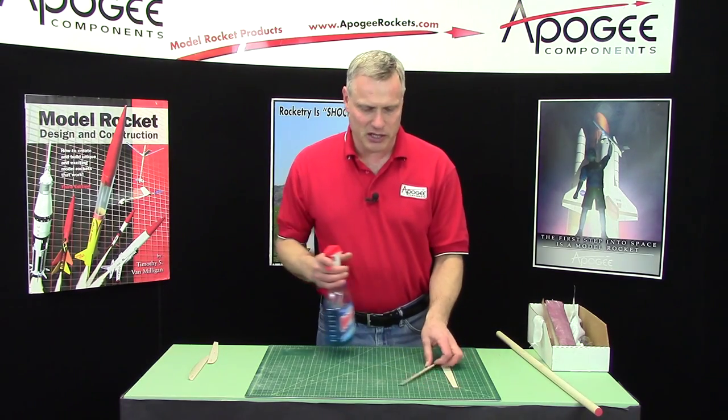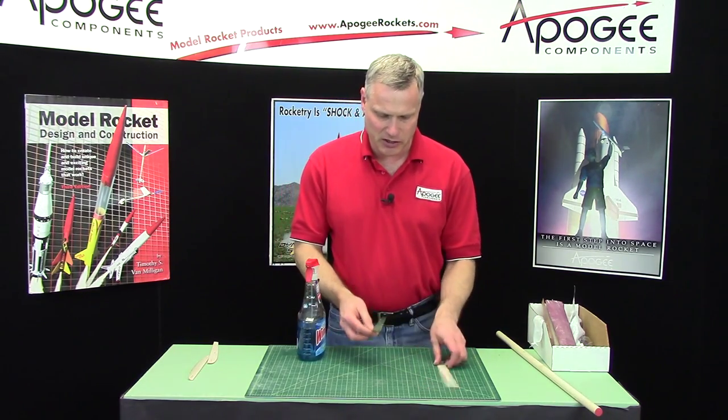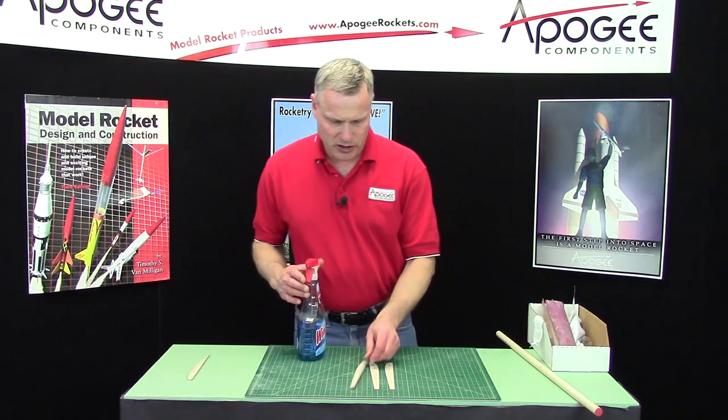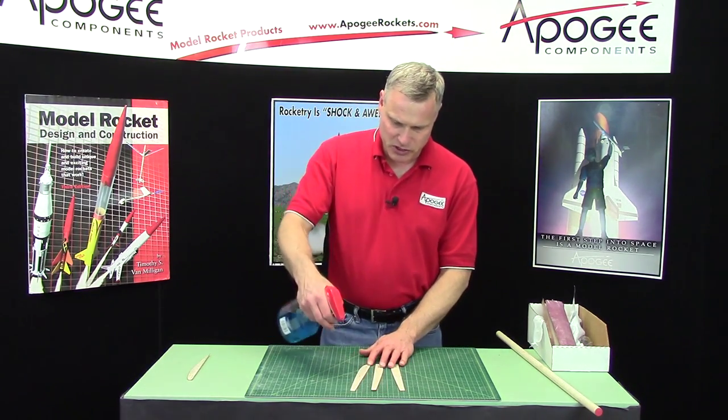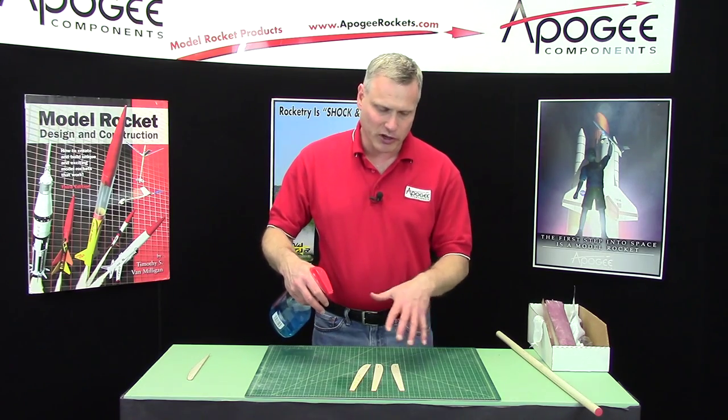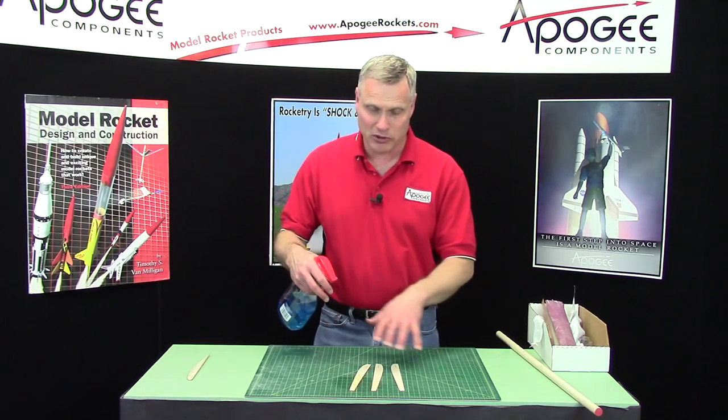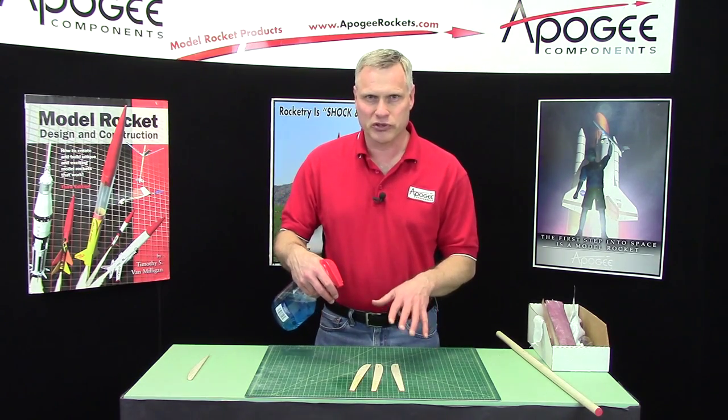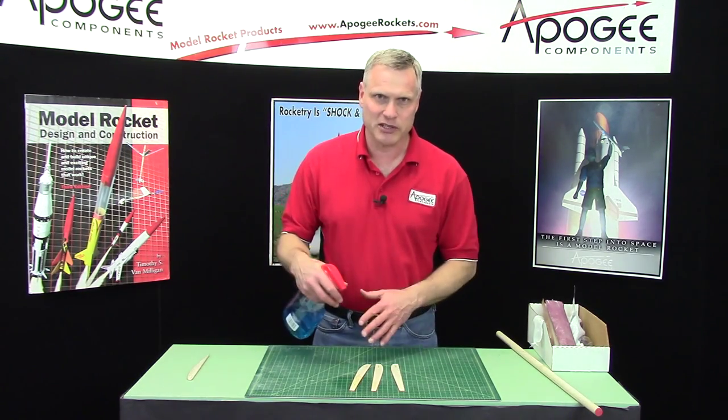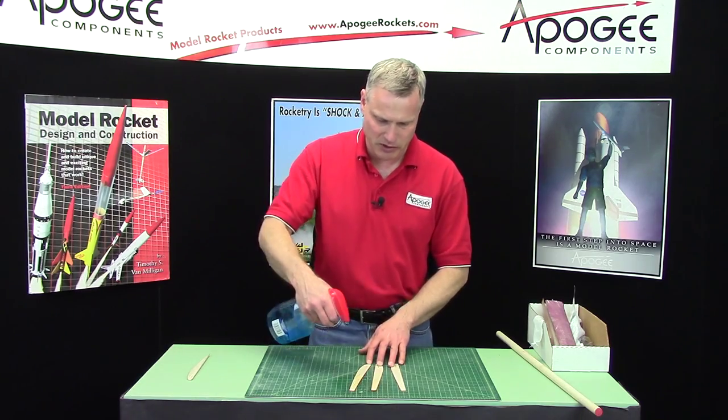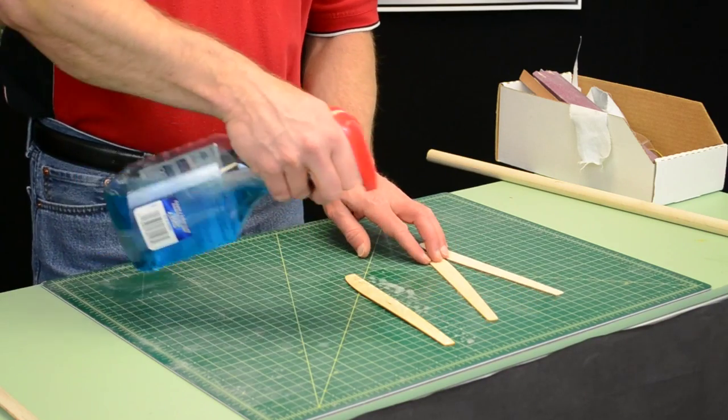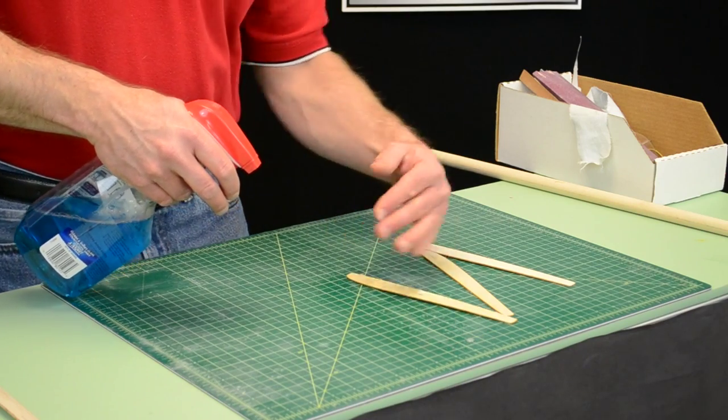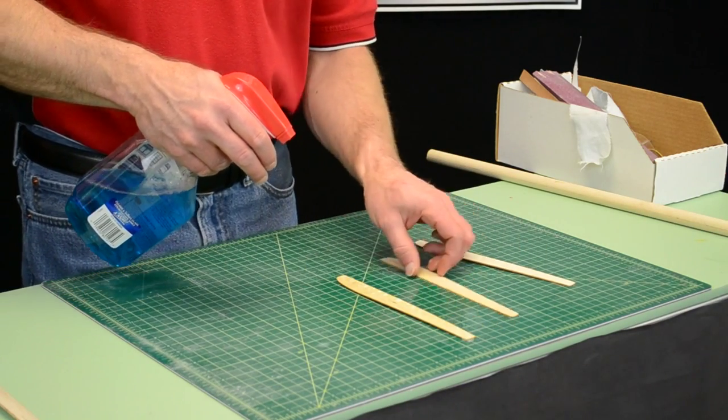The first thing is to marinate these in the ammonia solution so I'm just going to spritz these. If you're working on a plastic table like I am then just spray it right on the table. If it's a wood surface you might want to cover it up with a sheet of plastic like a garbage bag or something. You'll notice right away that this one is kind of puckering up and that's good.